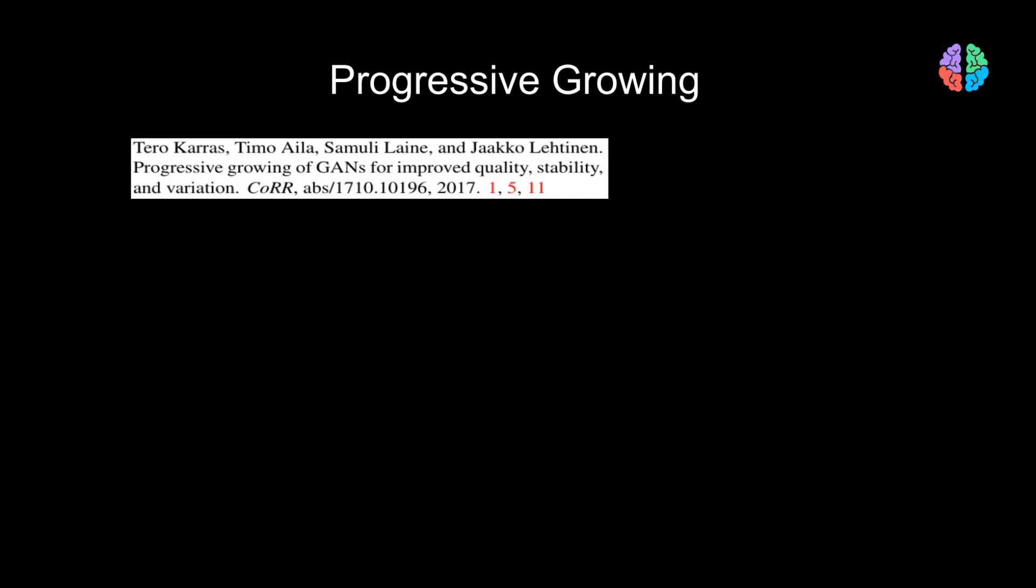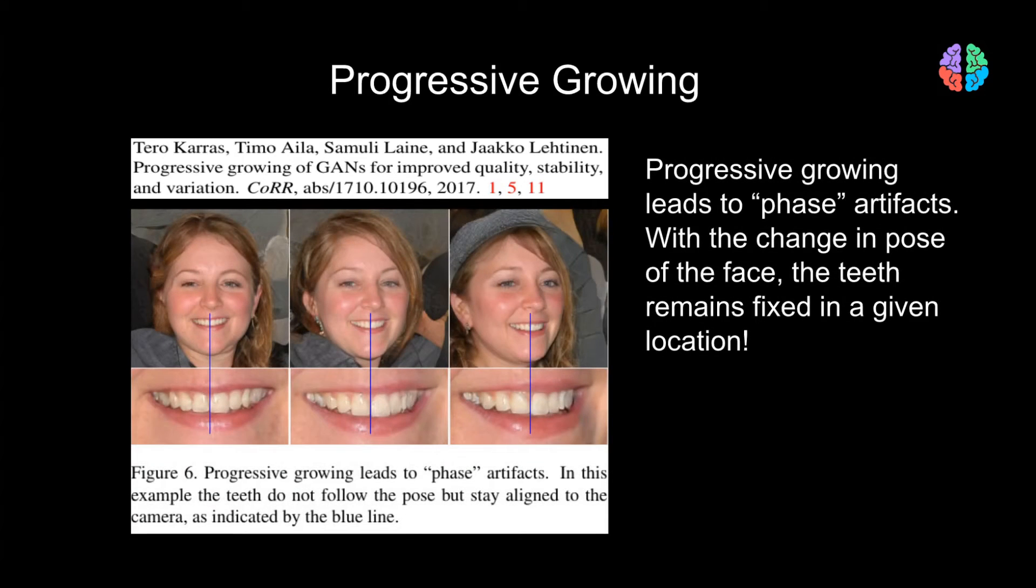Progressive growing was introduced in this paper to improve the quality of images generated and the stability of training GANs. However, as shown in this figure, it introduces face artifacts in the images. As the generated output face changes in pose, local details like the teeth remain fixed in a position. To overcome these, the paper searches for better network architectures in StyleGAN2.